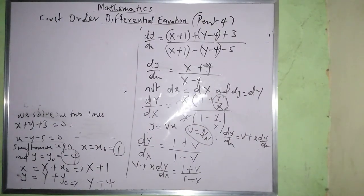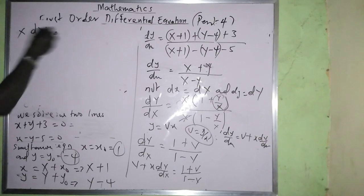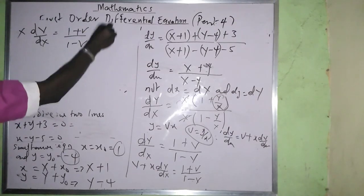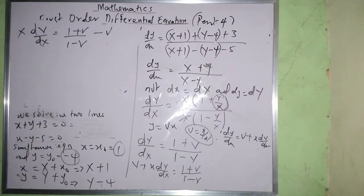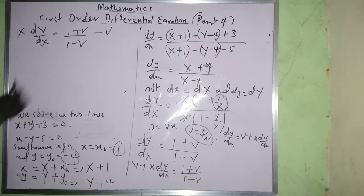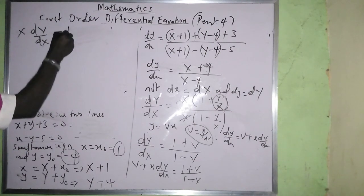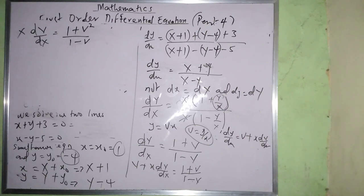After simplification, X(dv/dX) = (1 + v²)/(1 − v). Separating variables: (1 − v)/(1 + v²) dv = dX/X. This is now in normal homogeneous equation form and we can integrate both sides.